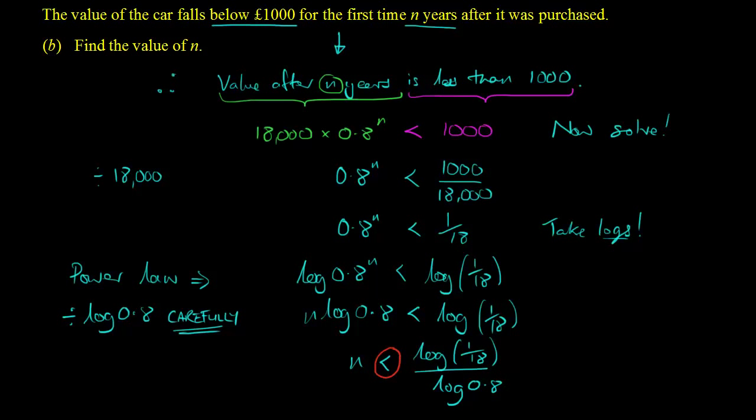Now, you won't realise it necessarily, or it might be obvious, but log of 0.8, if you just tap it into your calculator, you can confirm this. Log of 0.8 is a negative number. It works out as minus 0.09. And you should know by now that when you divide by a negative number, you have to flip the inequality sign round. So that's the point here, that's the trick, you have to make sure you flip the inequality sign round if you're dividing by a negative.